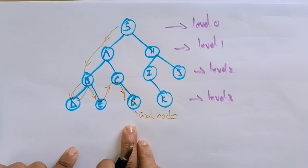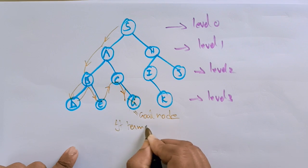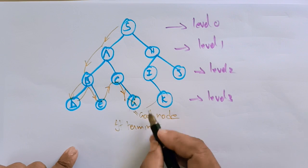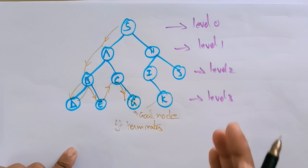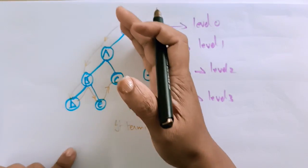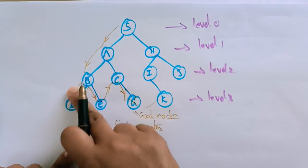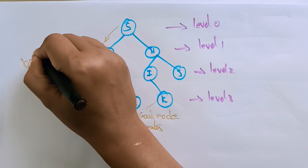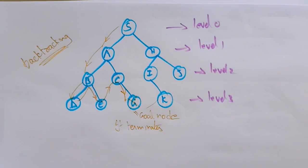Whenever G is found, the search terminates because it has reached the goal node. The remaining part of the tree won't be searched. This is how DFS travels with backtracking — backtracking is a key feature of DFS.